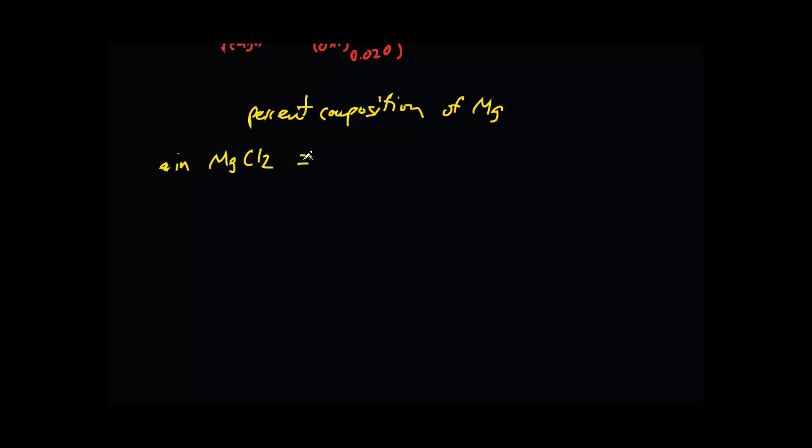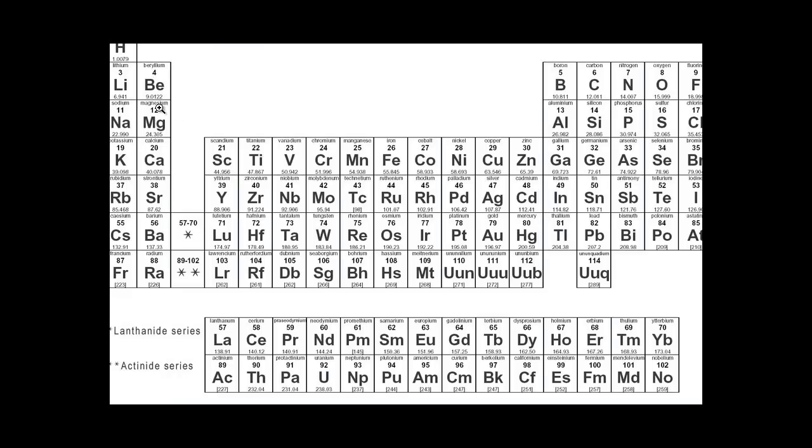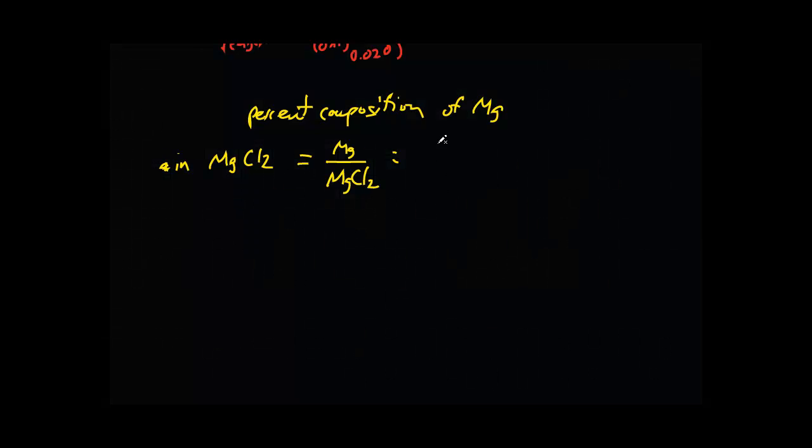The first thing I'm going to do is take the atomic weight of magnesium and divide it by the molar mass or molecular weight of magnesium chloride. Again, you've got to get that from the periodic table. Let's round—we're going to take 24 divided by 24 plus 2 chlorine, which is going to be 95. So 24 over 95 equals 0.25, so we've got about 25% of magnesium in magnesium chloride.